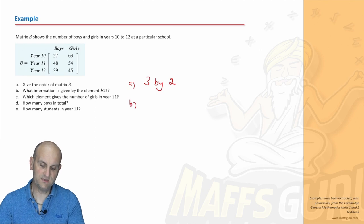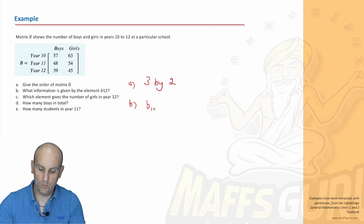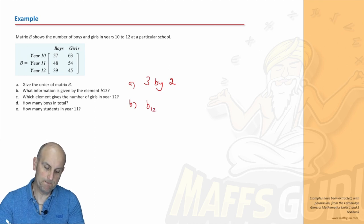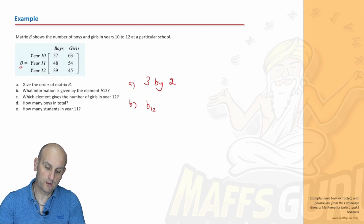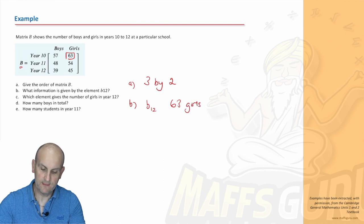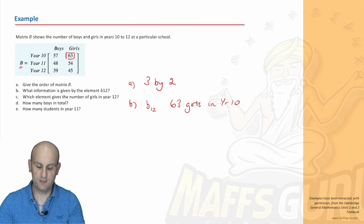Part B. What information is given by element B_1,2? So, we're looking for B_1,2. Let me see. So, B. Ah, there's B. So, we want row one, column two. There are 63 girls in year 10. Kuching.